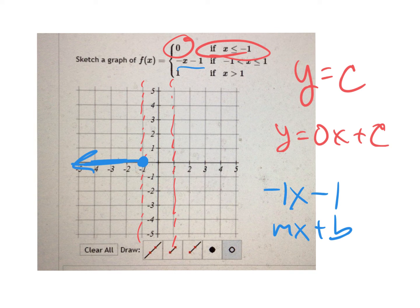So what I would do to graph this by hand, I would graph the negative 1, and then I know the slope is negative 1. So down 1, right 1.